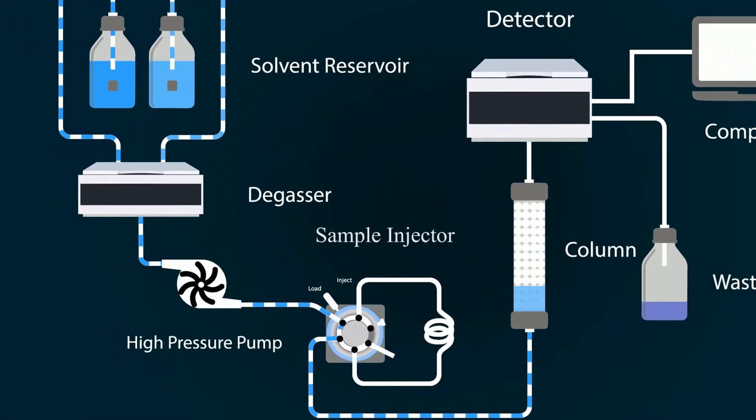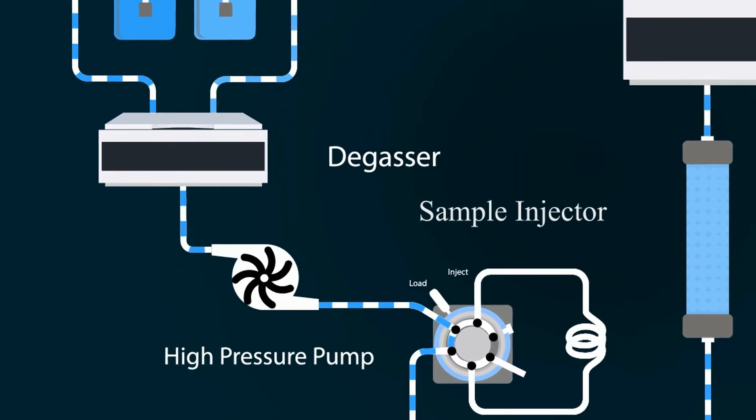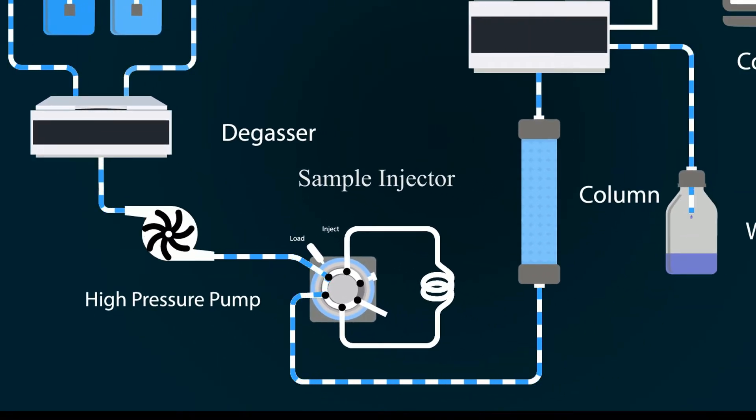Then move towards the high pressure pump, then sample injector, column and detector. In start, we wash the whole sample with the solvent.